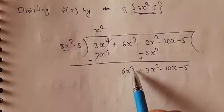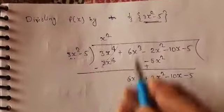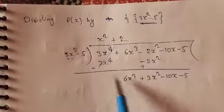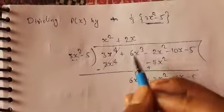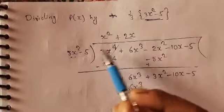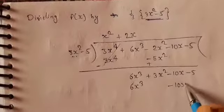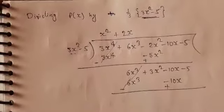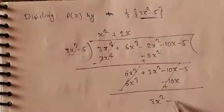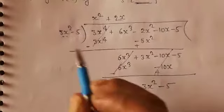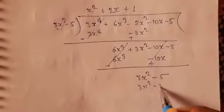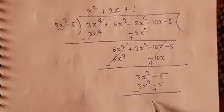Now from 3x² we have to make 6x³, so we need 2x. Multiplying by 2x: 2x × (3x² − 5) gives 6x³ − 10x. Changing the sign for subtraction: 6x³ cancels, −10x cancels, leaving 3x² − 5. Then 3x² − 5 divided by (3x² − 5) gives 1, and the remainder is zero.